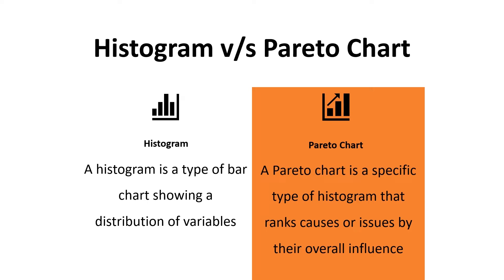A Histogram can be used to indicate the number of students who scored between a given range of scores, such as 0-20%, 20%-40%, and so on. A Pareto Chart might be employed to investigate the root reasons for consumer discontent. The reasons would be prioritized based on their frequency of occurrence, allowing the team to focus on the issues that have the greatest influence on customer satisfaction.